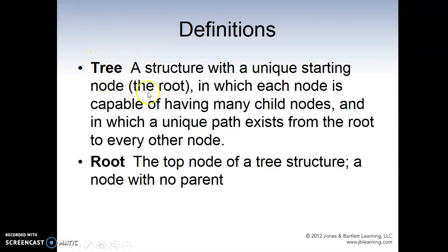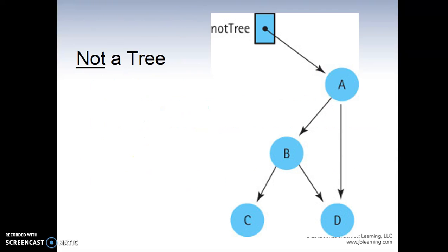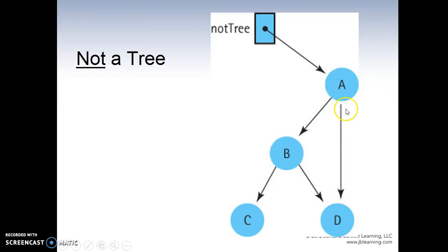A tree has a starting node called the root, and it has children — those are child nodes. We can call the node above a parent node. For example, A is a parent of B, and B is a parent of C and D. However, if you add a line from A directly to D, this structure is no longer a tree — it becomes a graph.